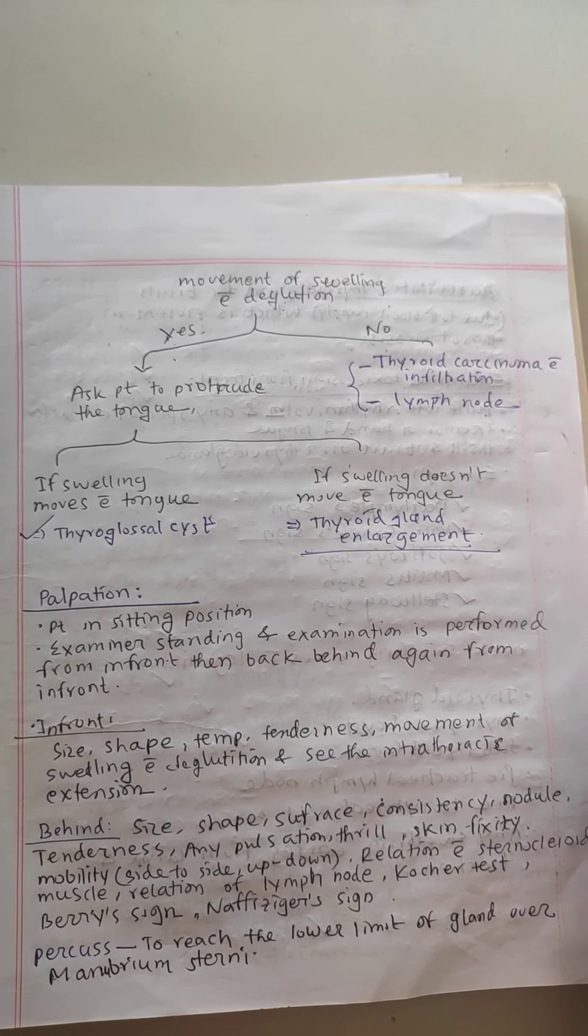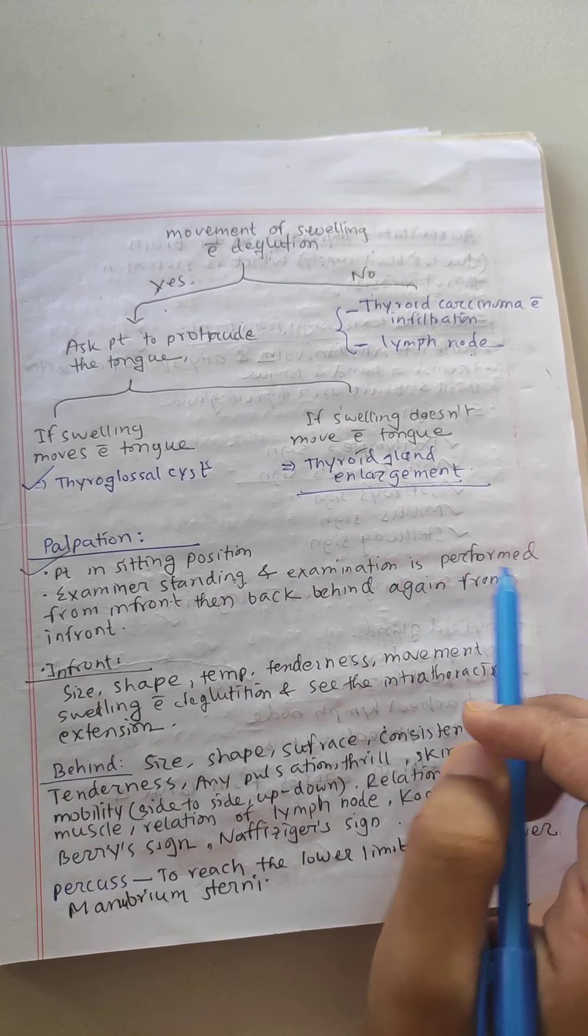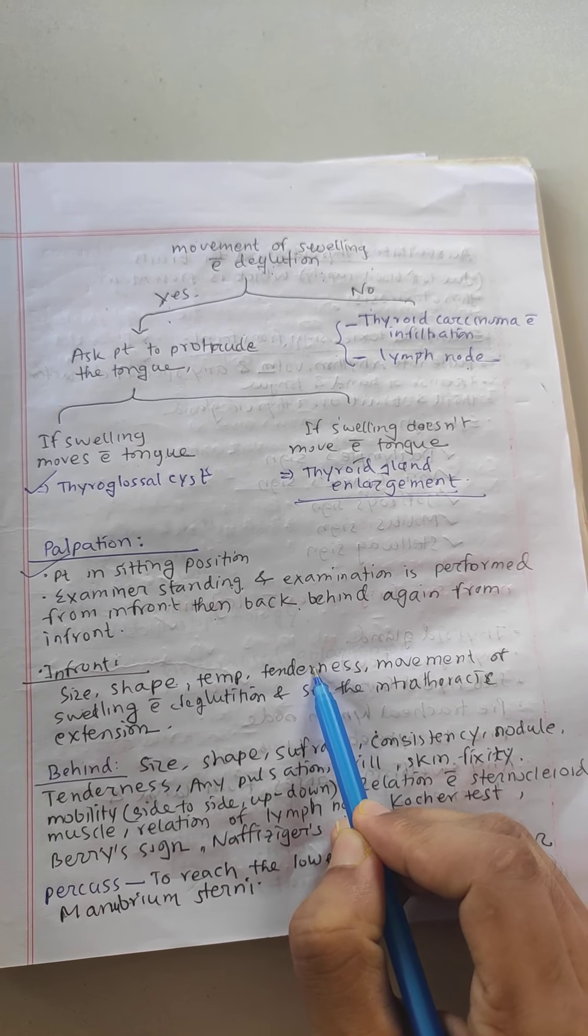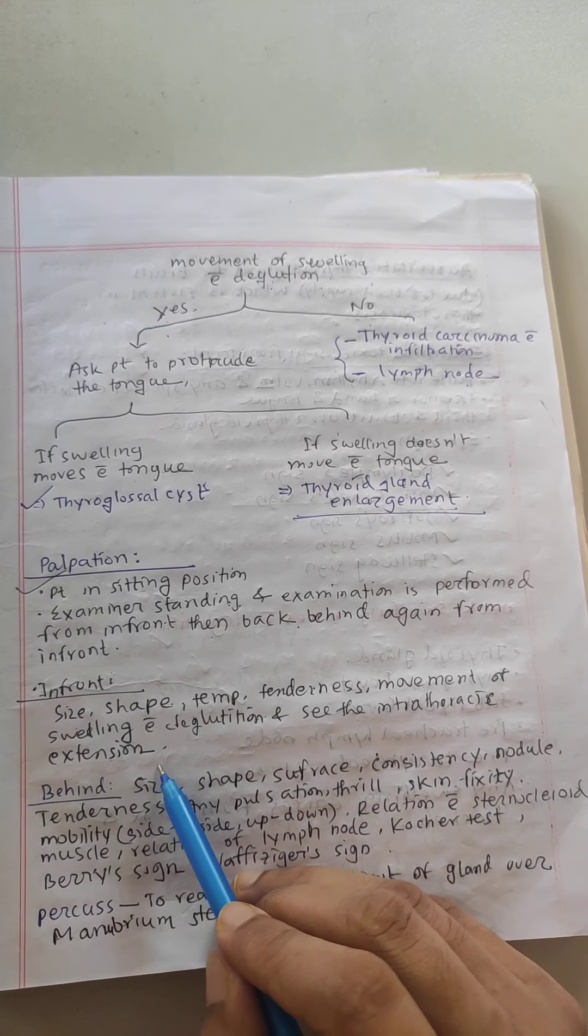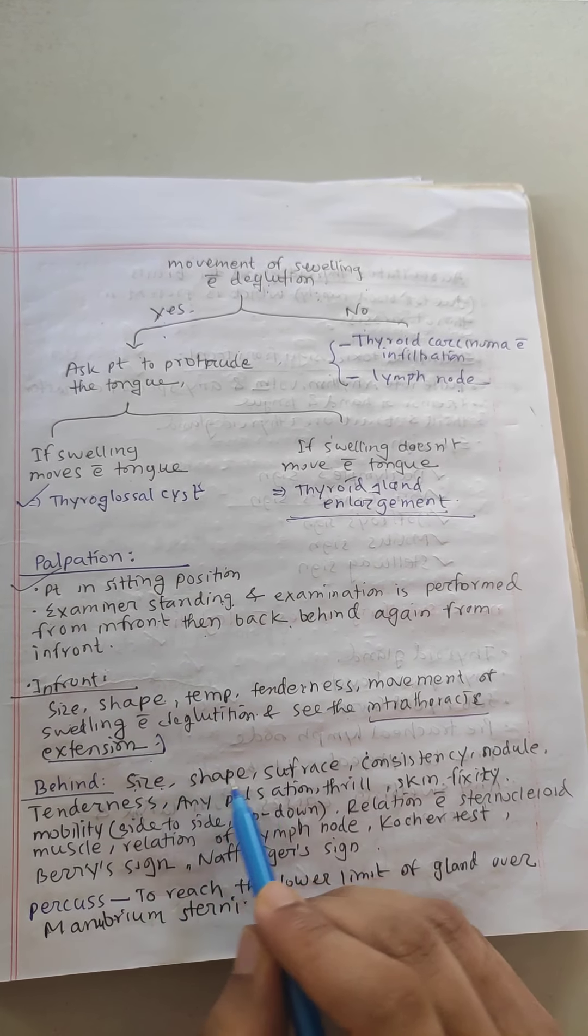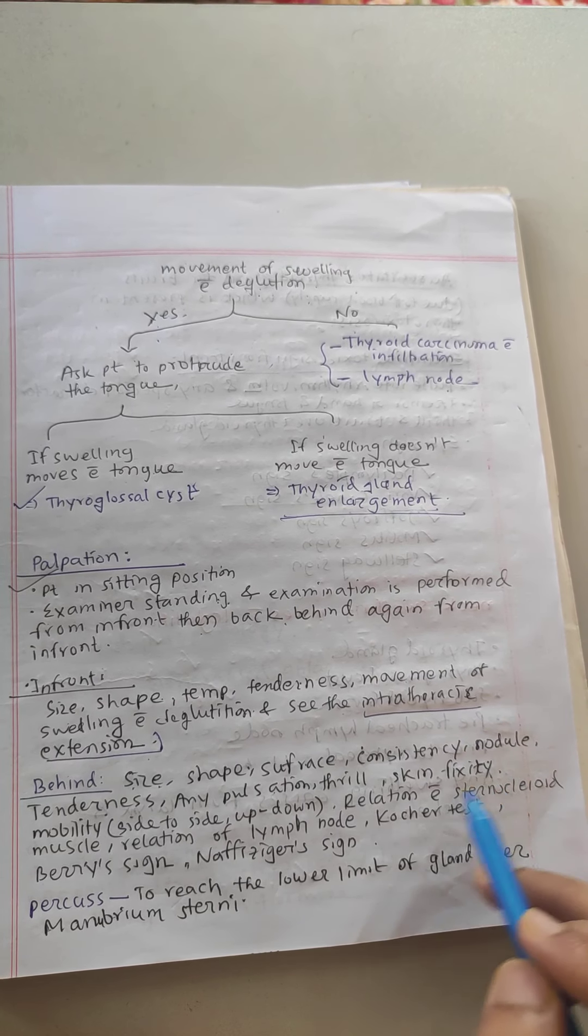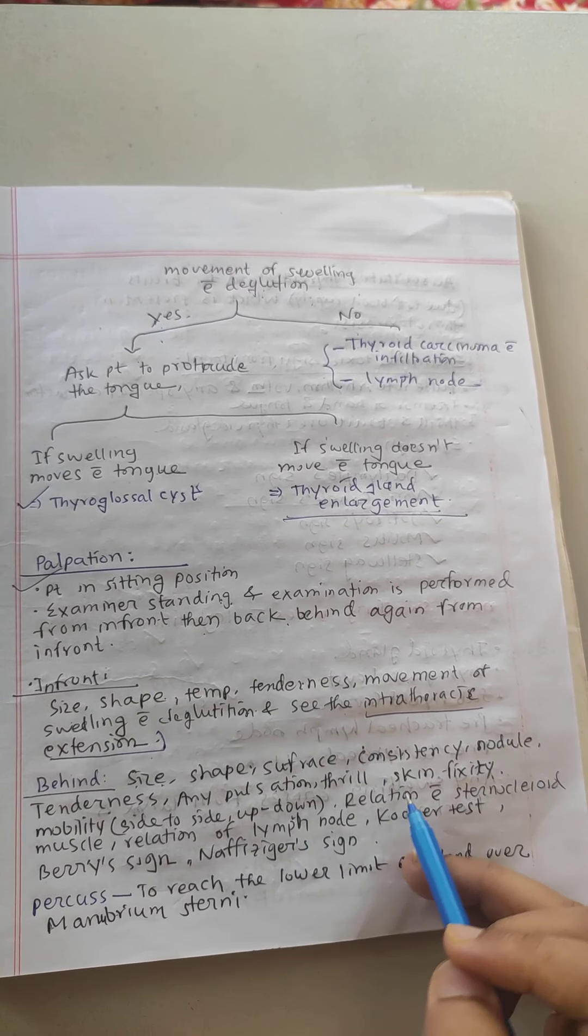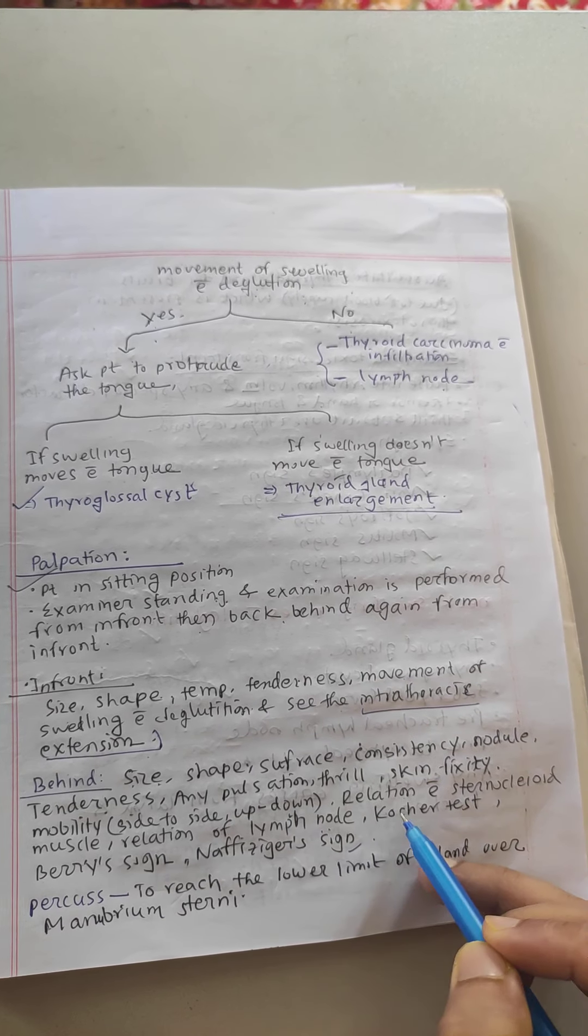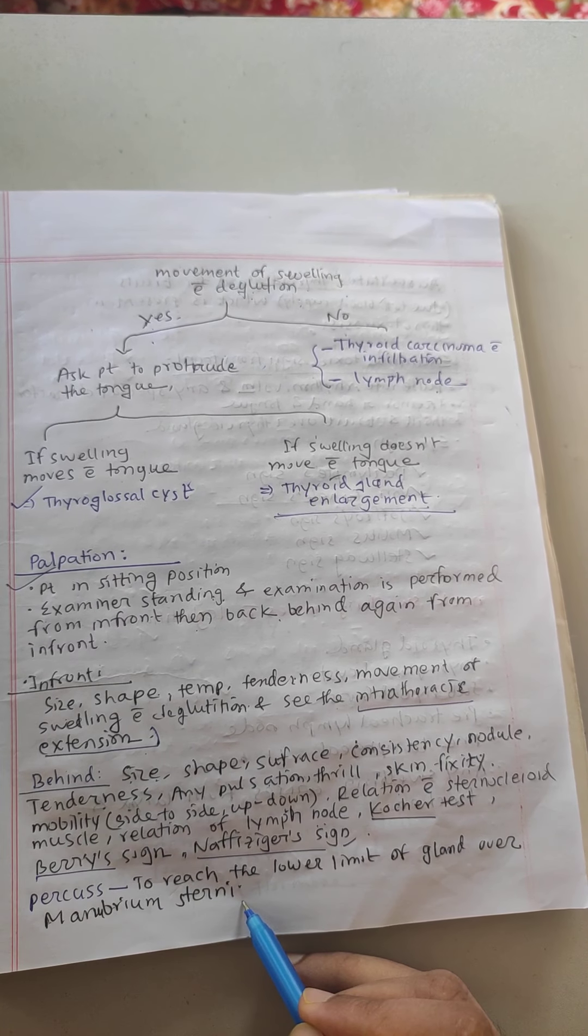Next, palpation. Patient in sitting position, examiner standing. Examiner performs examination from in front, then back, then again in front. In front, first palpation is size, shape, temperature, tenderness, then movement of the swelling with deglutition, then intrathoracic extension. Then from behind - size and shape, surface, consistency, nodule, tenderness, any pulsation or thrill, skin fixation, mobility both side to side and up and down, relation with the sternocleidomastoid muscle, relation with lymph nodes. Then Kocher test, Berry's sign, and Pemberton's sign.